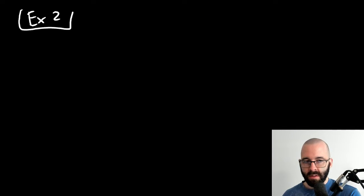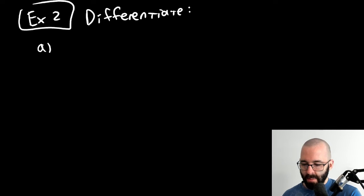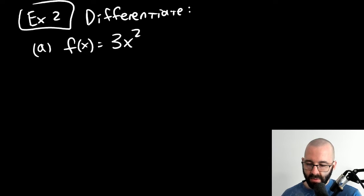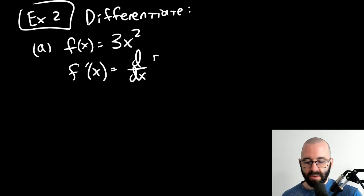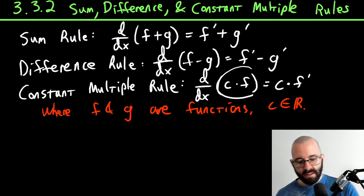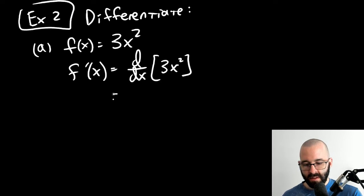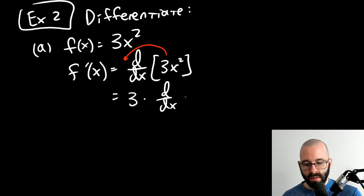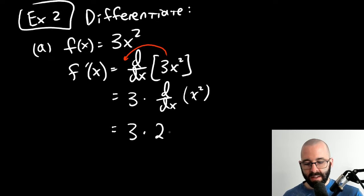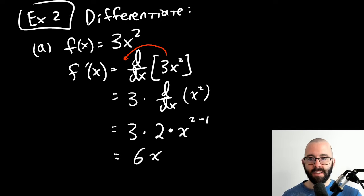Example 2, part a: differentiate f(x) = 3x². The derivative of 3x² — we can use the constant multiple rule, which says the constant comes out in front. So it's three times the derivative of just x². Now we use the power rule: bring the exponent down and subtract one from the exponent. That gives us six times x to the first power, or just 6x.